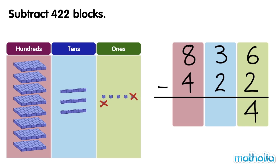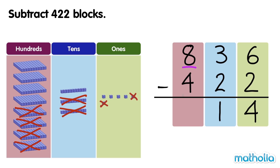Next, subtract the tens. 3 tens minus 2 tens equals 1 ten. Now subtract the hundreds. 8 hundreds minus 4 hundreds equals 4 hundreds. There are 414 blocks left. 836 minus 422 equals 414.